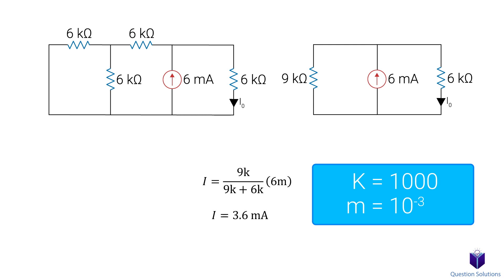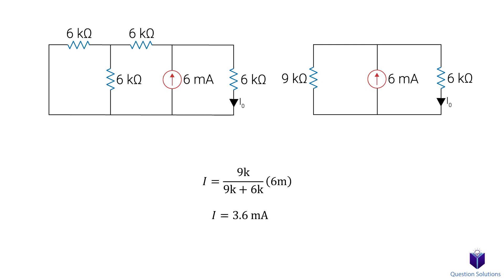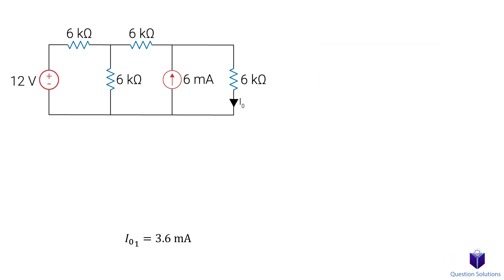So this current value we found is the current that will flow through the 6k ohm resistor with just the 6mA current source in the circuit. We will label it I0. Next, we put the voltage source back and remove the current source. When we remove the current source, we replace it with an open circuit. So here, that would just mean the whole conductor is gone.